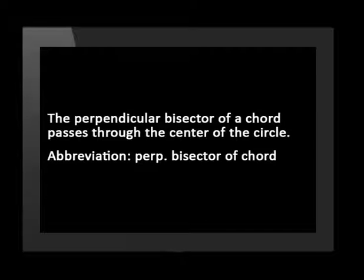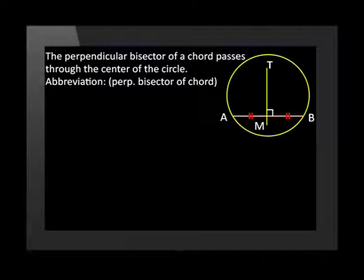Let's consider another converse to this theorem. It is stated as: the perpendicular bisector of a chord passes through the center of the circle. The abbreviation for use in proofs is: perp bisector of chord. We have to prove this using a method called proof by contradiction — where we make a false statement and prove it to be false. This method is sometimes called by its Latin name, reductio ad absurdum. In the diagram, TM is a perpendicular bisector of chord AB.